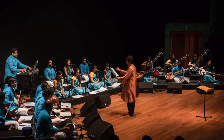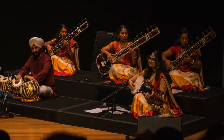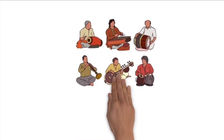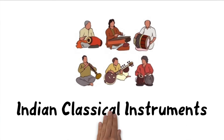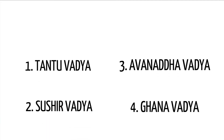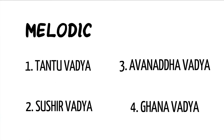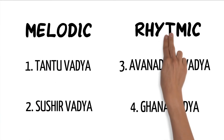Have you ever wondered what these instruments were? Today we'll be discussing Indian classical instruments. Indian classical music has a wide array of instruments — in fact, it is so wide that it is impossible to cover all of them in one video. Today we'll be looking at the ones you may more commonly come across. Indian classical instruments can be classified into four categories: the first two make up the melodic instruments, while the last two make up the rhythmic instruments.